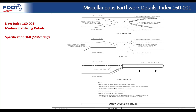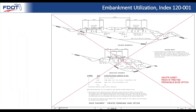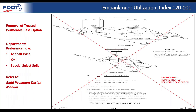Embankment utilization standard plan index 120-001 is where we relocated the excess base material information. We also did general layout adjustments to match current formatting for the roadway standard plan and bring it up to date with new CAD standards — updating the index and general notes. One other change to index 120-001 was the removal of the treated permeable base option, which was previously sheet 2. The department has moved in a direction of no longer having treated permeable base as an option for rigid pavement; currently only asphalt base or special select soils is shown, as referenced in the rigid pavement design manual.